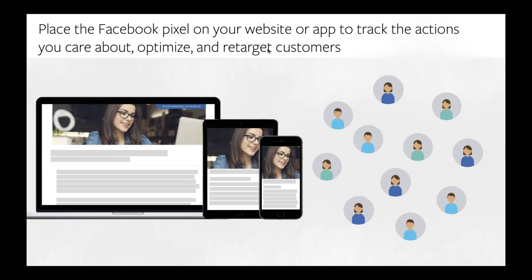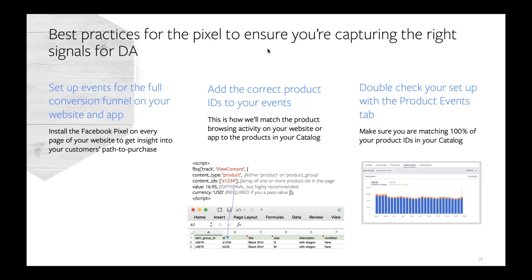The pixel unlocks some of our most sophisticated products like dynamic ads, so it's hugely important to make sure your pixel is implemented correctly. A few best practices: you want to set up events for the full conversion funnel on your website or app, which means installing the pixel on every page so you have insight into the customer's path to purchase. We provide a number of standard events — search, view category, view content, add to cart, and purchase — and you can also create custom events. It's important to cover the full funnel so you have signal for what a user is doing at every stage.